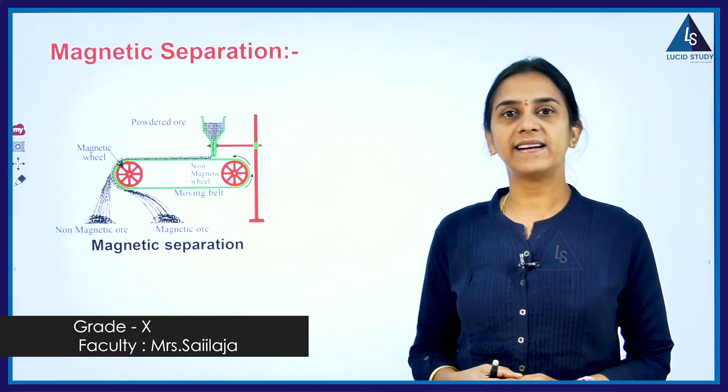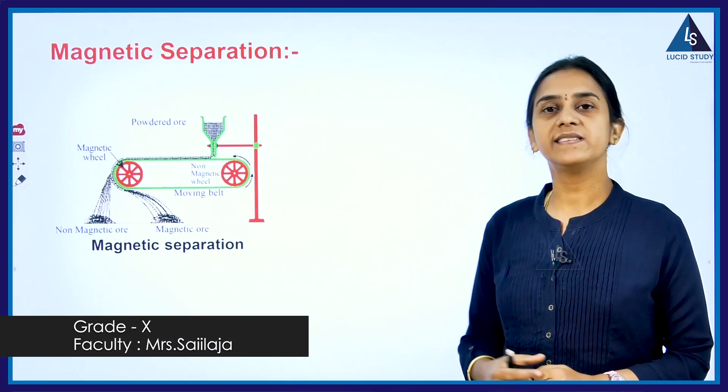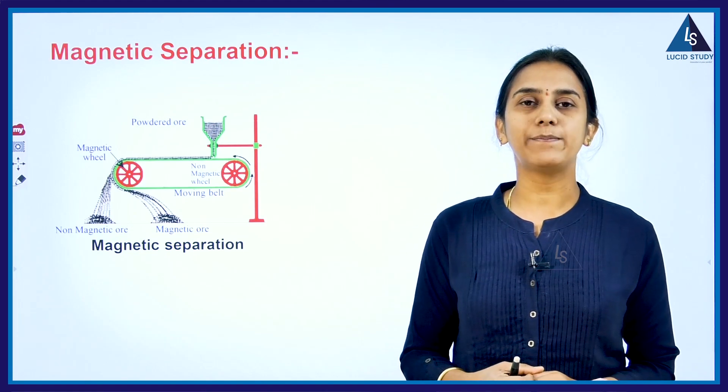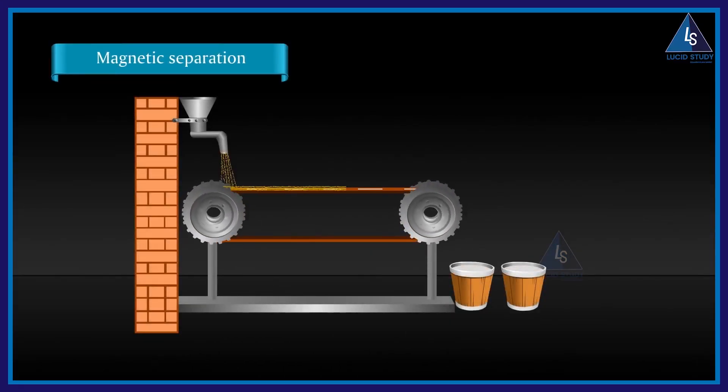Magnetic separation. This concept is based on the magnetic property. Iron ore is an example by which we can separate the ore.